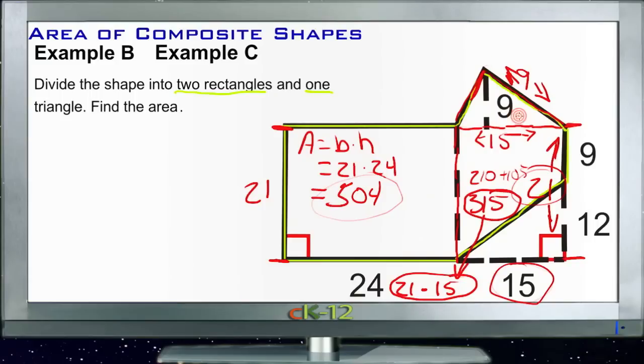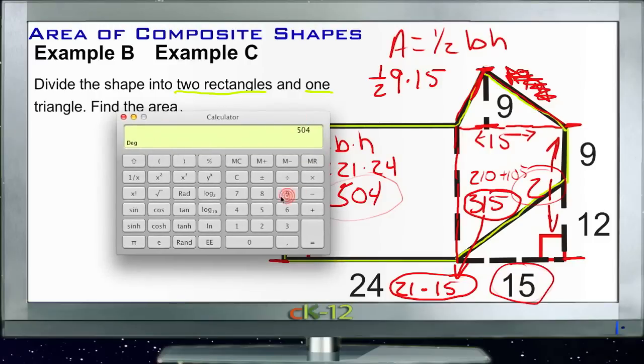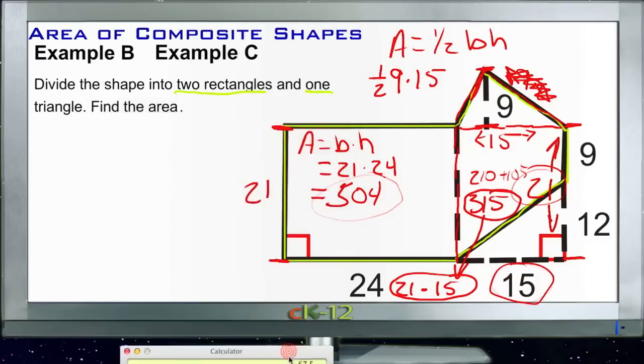And then our triangle up here. We have 15, and I think that 9 is from here to here, so that makes things easier too, because our triangle area is one-half base times height. So we'd have one-half of 9 times 15. And 9 times 15 is 135. Half of 135... 135 divided by 2 equals 67 and a half. So 67 and a half would be the area of our triangle right here.